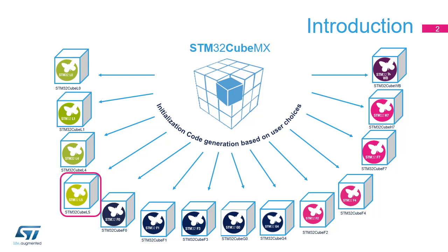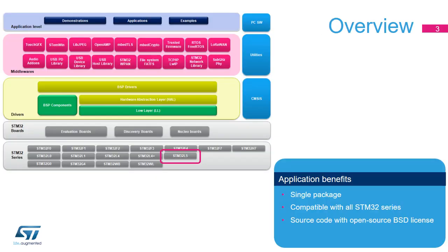A consistent set of middleware components is included: RTOS, USB, Trusted Firmware, File System, and USB Power Delivery. The embedded software package follows a layered approach.